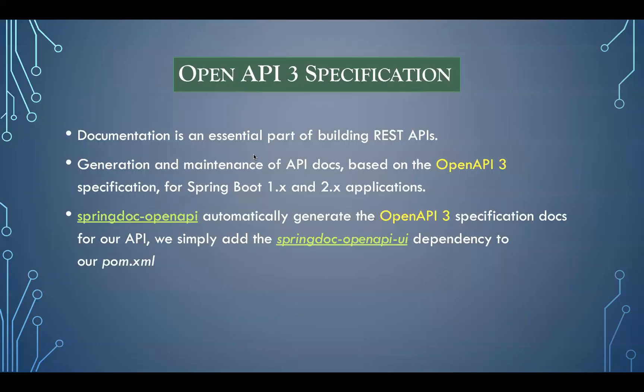OpenAPI uses the API 3 specification to generate documentation for REST APIs. If you are already using version 2.0 in your project, you can migrate — it is very easy configuration. In Swagger 2.0 you needed to create a configuration class and do a lot of setup, but here you don't need to do those things. It is very easy — generation and maintenance of API is based on API 3 specification.